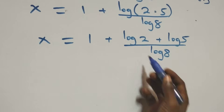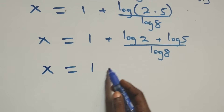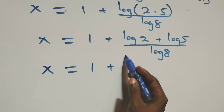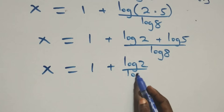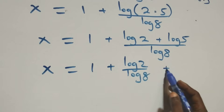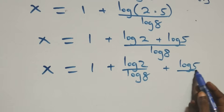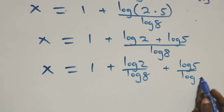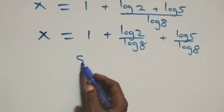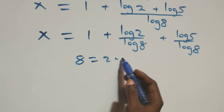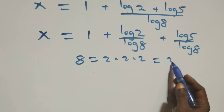We separate this into two fractions: x equals 1 plus log 2 over log 8 plus log 5 over log 8. Also, 8 can be written as 2 times 2 times 2, which is 2 cubed.